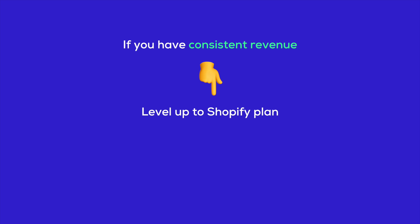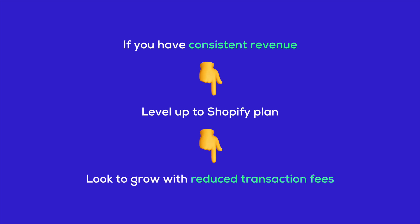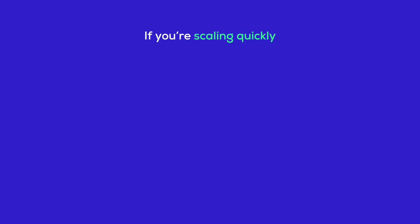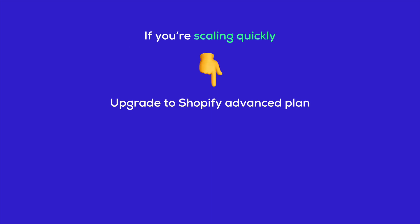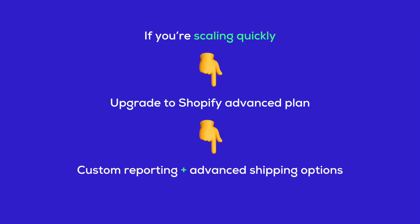If you have consistent revenue, you'll want to level up to the Shopify Plan. It's a great option for small businesses looking to grow with reduced transaction fees to help you scale efficiently. If you're scaling quickly, the Advanced Plan is where you'll want to land — with custom reporting, advanced shipping options, and up to 15 staff accounts, it's tailored for businesses that are scaling quickly.